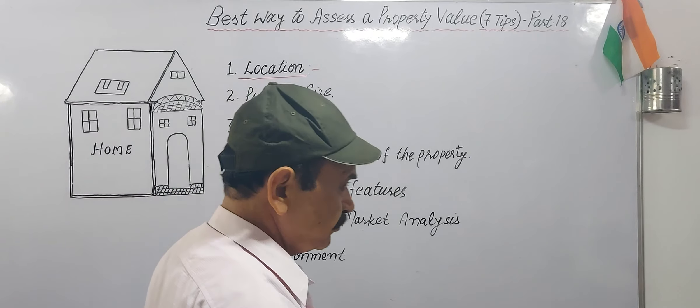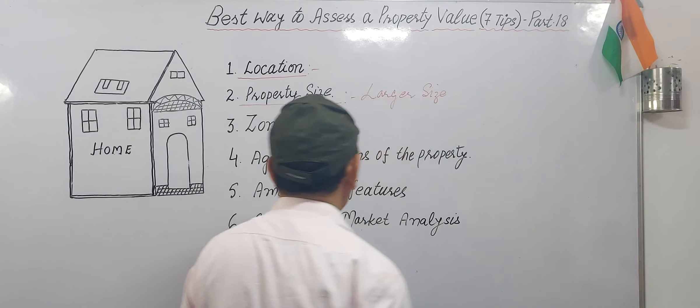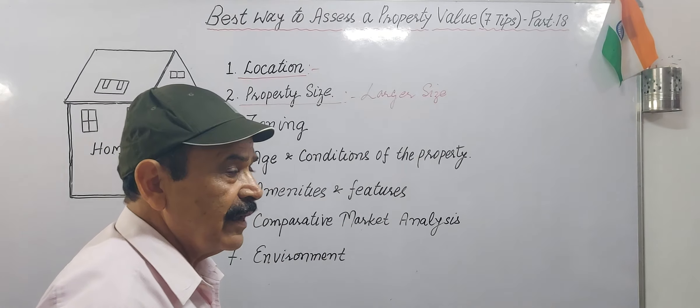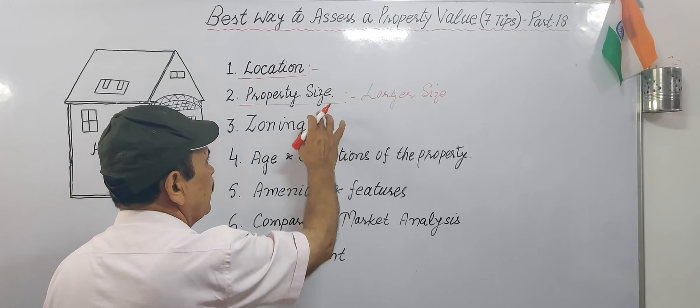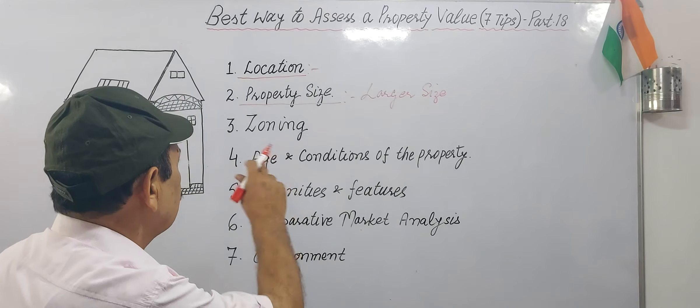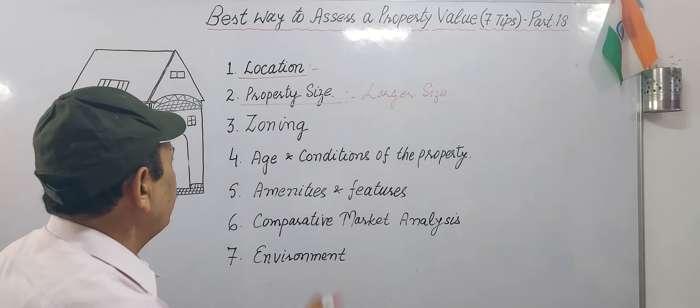The second factor is property size. A larger size property can be used for multiple purposes — there is more space to work. You can carry out any kind of activity within the same building and generate income from it. So property size is the second factor you need to pay attention to.